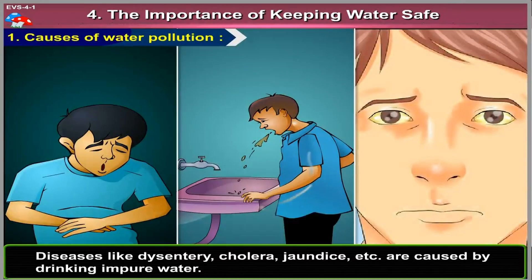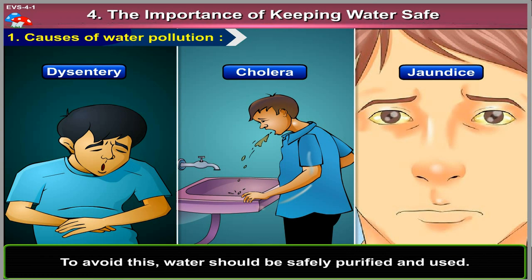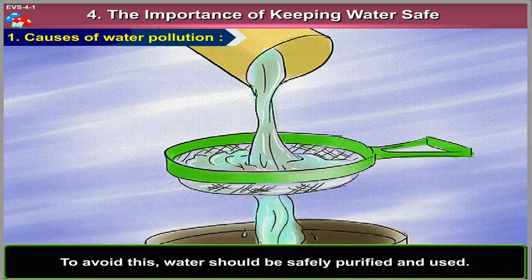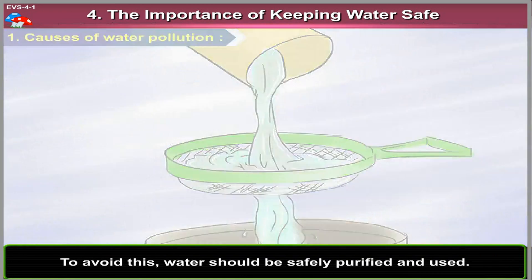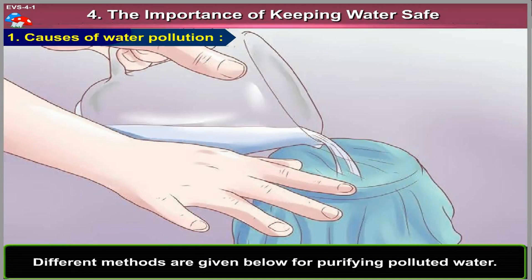Diseases like dysentery, cholera, jaundice, etc. are caused by drinking impure water. To avoid this, water should be safely purified and used. Different methods are given below for purifying polluted water.